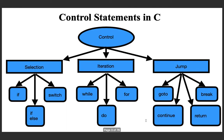We can have a quick look at various types of control statements allowed in the C programming language. They are classified into selection, iteration, and jump. Under each category, there are various statements permitted in the C language. For example, under the selection type, there are if statements, if-else statements, and switch statements. The agenda today is to discuss selection, except the switch statement, which we will do in the next class.